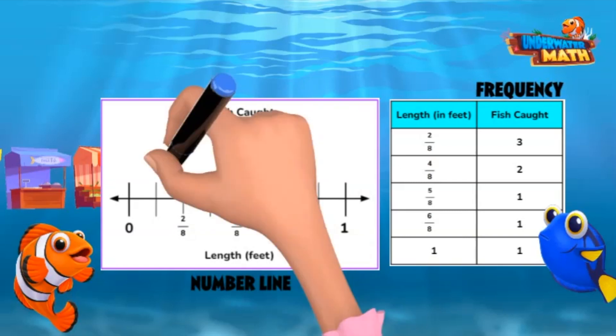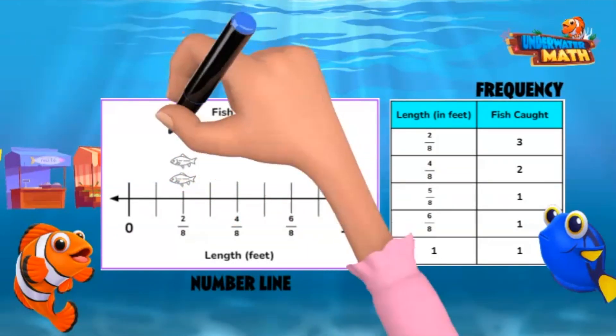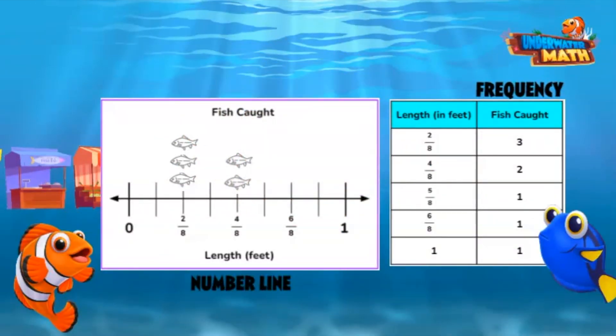Above two-eighths we need three fish. Above four-eighths or one-half we need two fish. There is one fish above each five-eighths and six-eighths. Lastly, only one fish measured one foot, so one above one foot. Great job Oliver!